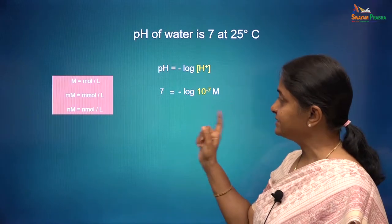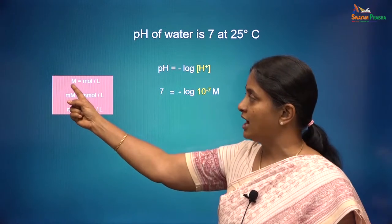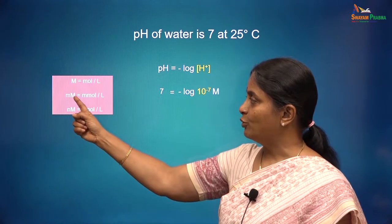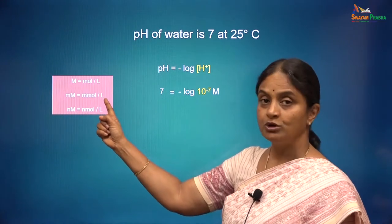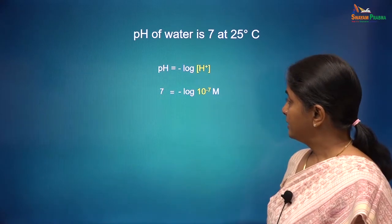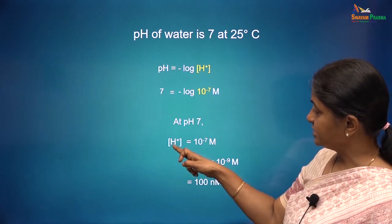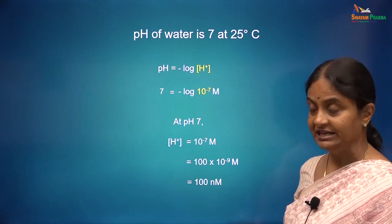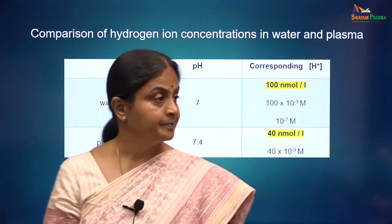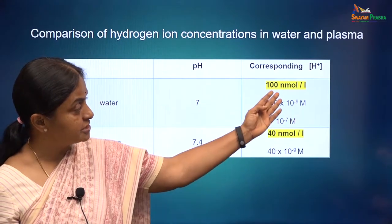When I say capital M, what is meant is moles per liter — referred to as molar. Millimolar means millimoles per liter. This is nanomolar. For a pH of 7, the hydrogen ion concentration in solution has to be 100 nanomoles per liter. Water has a pH of 7 and the corresponding free hydrogen ion concentration is 100 nanomolar.